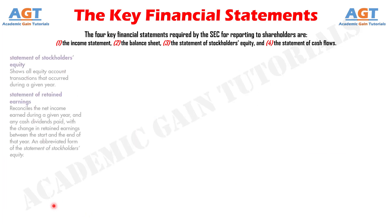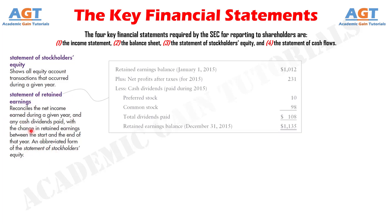The statement of retained earnings is an abbreviated form of the statement of stockholders' equity. Unlike the statement of stockholders' equity, which shows all equity account transactions that occurred during a given year, the statement of retained earnings reconciles the net income earned during a given year and any cash dividends paid with the change in retained earnings between the start and the end of that year. This table presents the statement for a company for the year ended December 31, 2015.